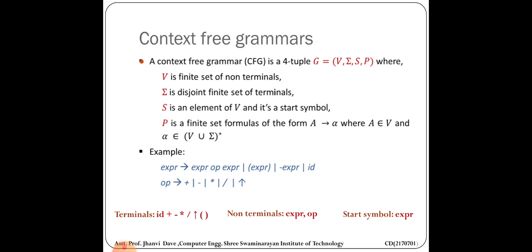Sigma is a set of terminals containing all small letters, digits 0 to 9, and all symbols such as opening bracket, closing bracket, curly braces, hashtag, plus, multiplication, division — all such symbols are considered part of the terminals (sigma set). S is the starting symbol of your production rule, and P is the set of production rules which makes a grammar. An example is given: expr → expr op expr | ( expr ) | - expr | id, and op → + | - | * | / | ^.